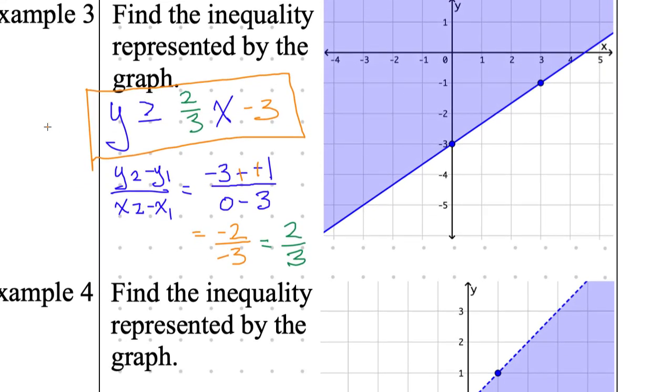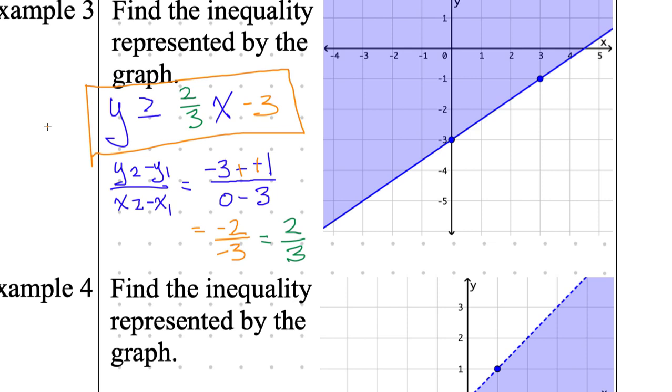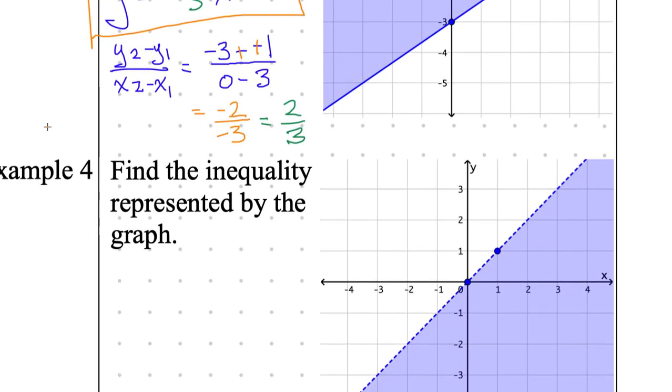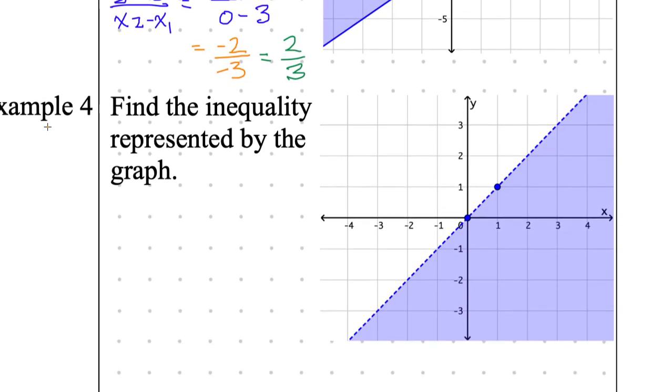All right, so example number four is slightly trickier, but I want you guys to try it on your own. So good luck. You can work with a neighbor. You can work in a group of three if you want. Somehow figure out the inequality represented by that graph. After you finish, just check with at least one person, and then you could begin on Khan Academy.